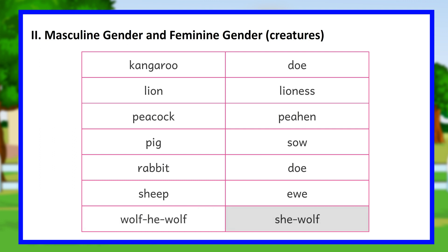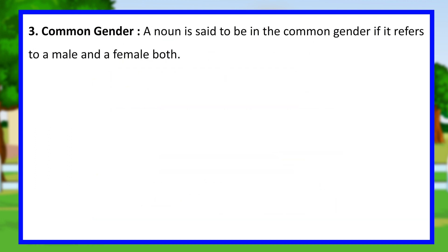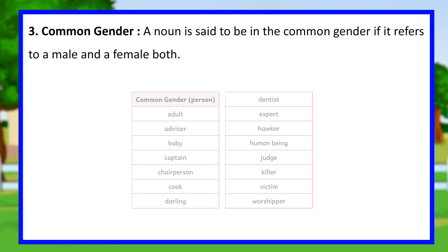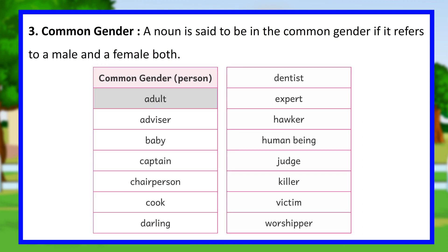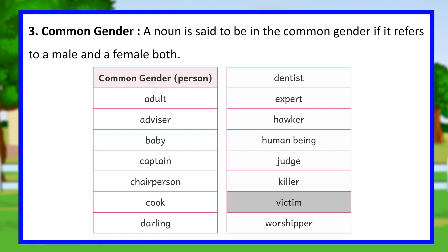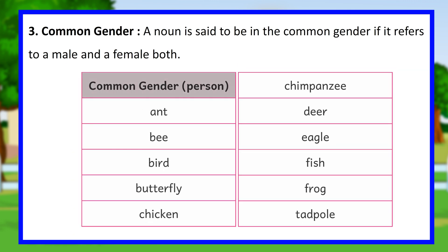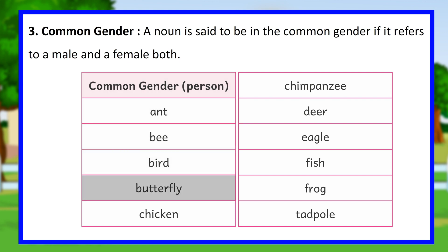Common gender: a noun is said to be in the common gender if it refers to both a male and a female. Common gender persons include: adult, advisor, baby, captain, chairperson, cook, darling, dentist, expert, hawker, human being, judge, killer, victim, worshipper. Common gender creatures include: bee, bird, butterfly, chicken, chimpanzee, deer, eagle, fish, frog, and tadpole.